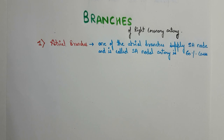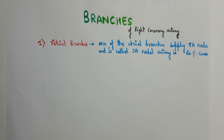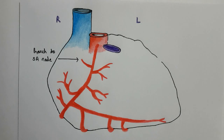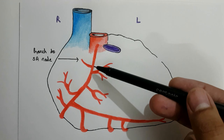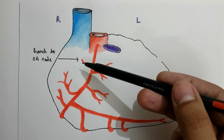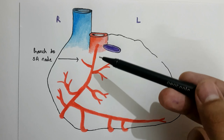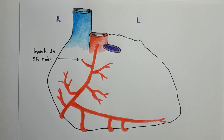Now let us talk about the branches of the right coronary artery — there are five branches. The first are the atrial branches, one of which supplies the SA node (the pacemaker of the heart) and is called the SA nodal artery. Importantly, the SA nodal artery originates from the right coronary artery in only 60% of cases; in the remaining 40%, it originates from the left coronary artery.